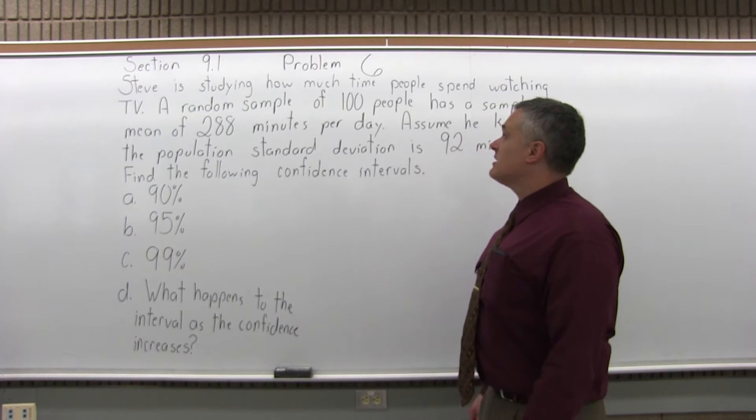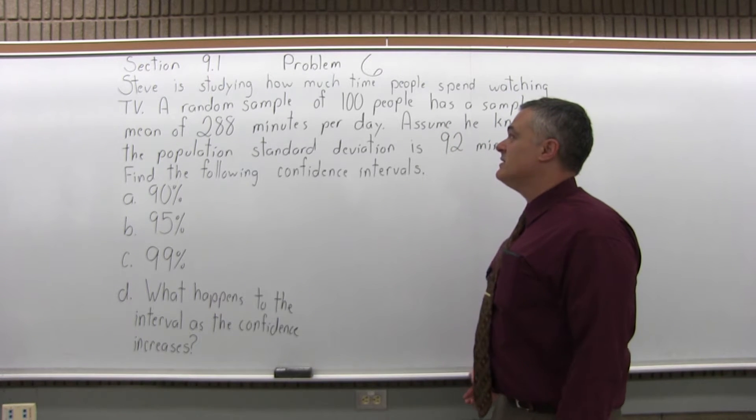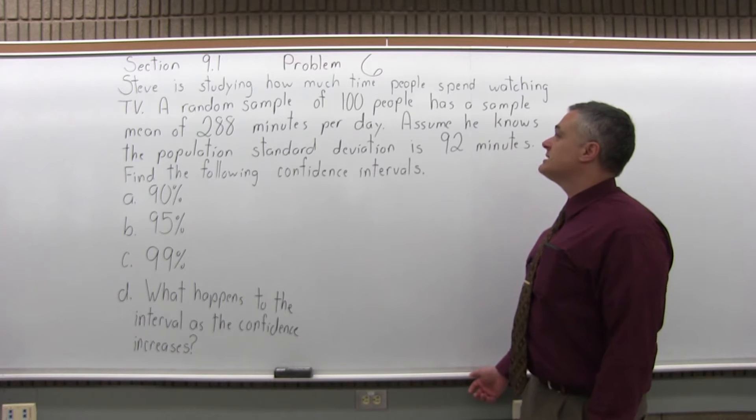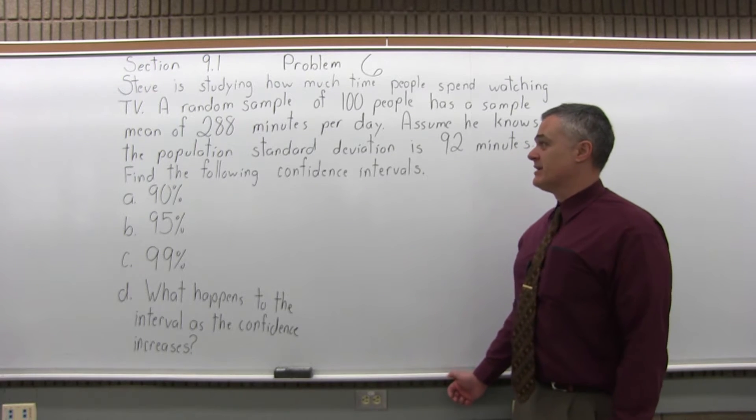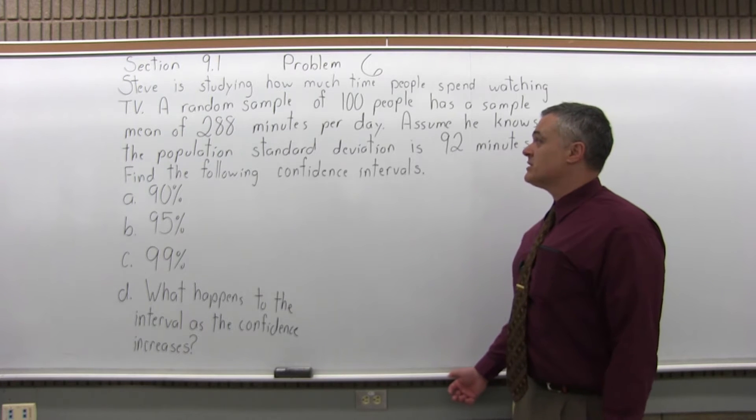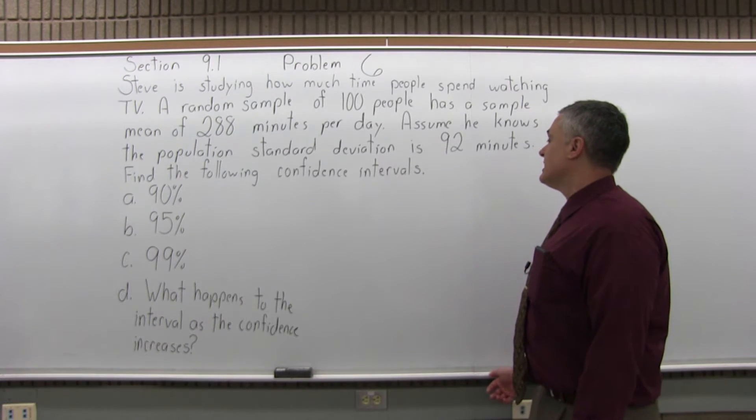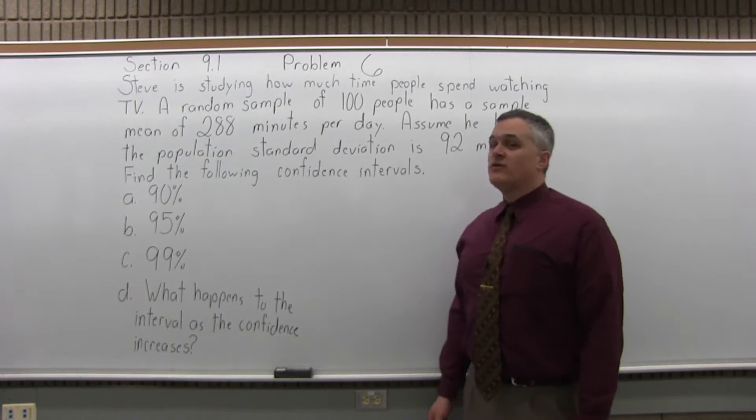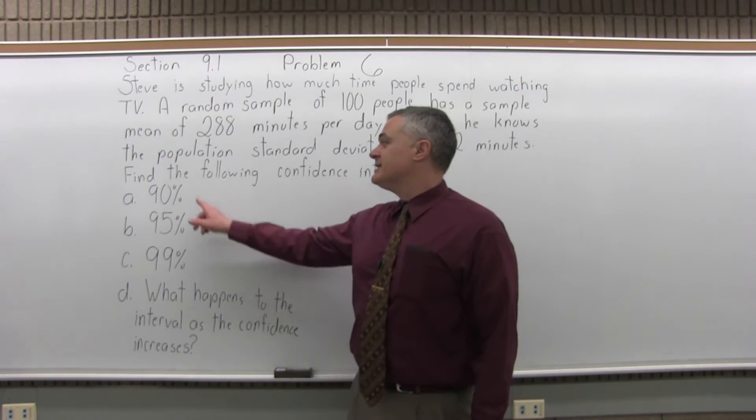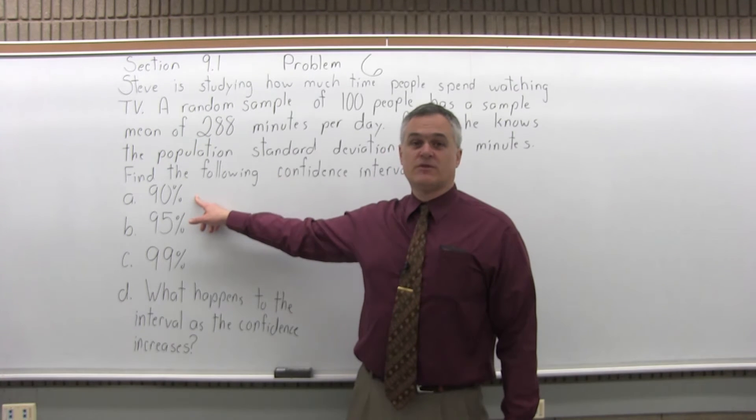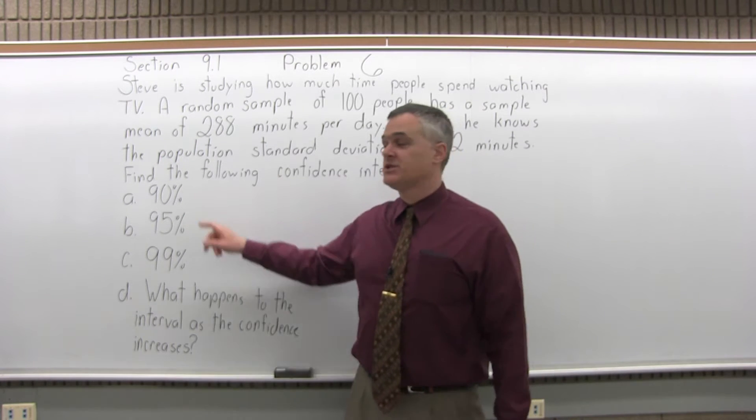Steve is studying how much time people spend watching TV. A random sample of 100 people has a sample mean of 288 minutes per day. Assume the population standard deviation is 92 minutes. Find the following confidence intervals, starting with 90%.